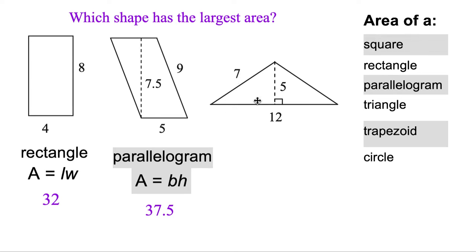And then that last one there, anything with 3 sides is our triangle. This one looks a little intimidating because of the 1 half, but we're just going to multiply that times the base, 12, times the height, 5.